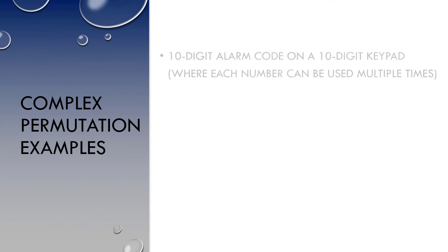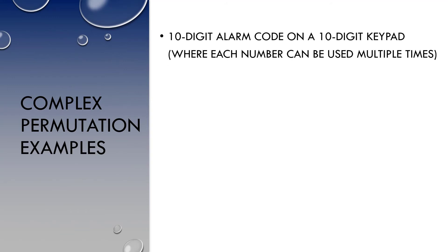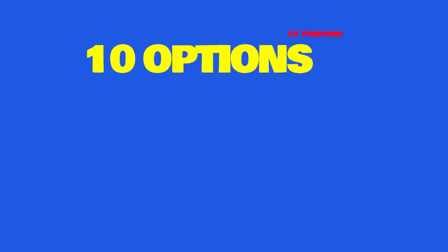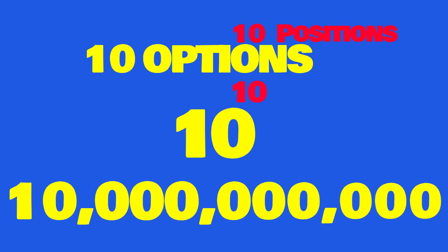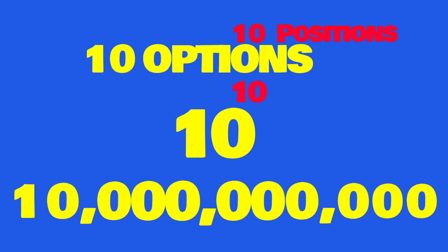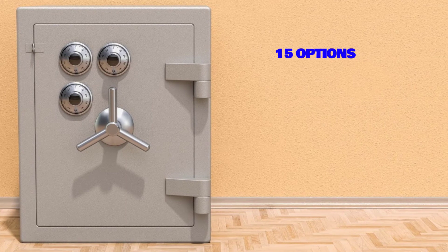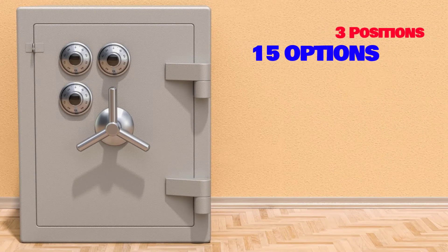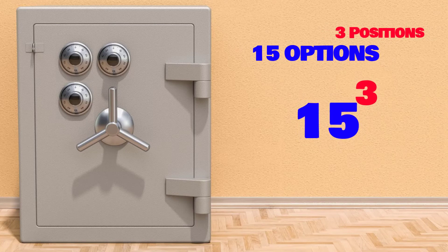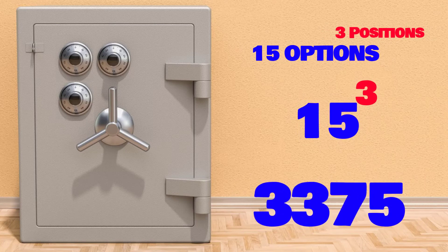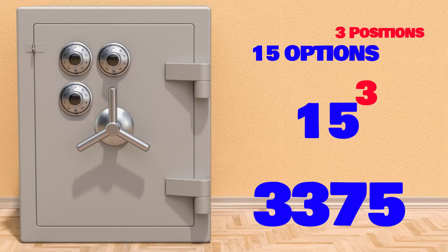Two more examples. How about a 10-digit alarm code on a 10-digit keypad where each number can be used multiple times? There are 10 possible options for each of the 10 positions. So we're talking 10 to the 10th power, which is going to give us 10 billion possible codes. Imagine how difficult that is to guess. And lastly, what about a safe with three 15-number dials? You've got 15 options for each of the three positions. So you have 15 cubed, or 15 times 15 times 15, which leaves us with 3,375 possible combinations on that safe.